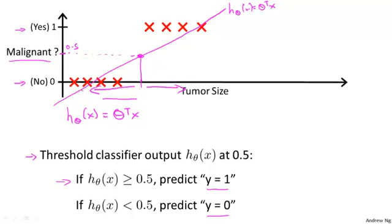But now let's try changing the problem a bit. Let me extend out the horizontal axis, and let's say we got one more training example way out there on the right. Notice that that additional training example doesn't actually change anything. Looking at the training set, it's pretty clear what a good hypothesis is: everything to the right of somewhere around here, we should predict as positive, and everything to the left, we should predict as negative because all the tumors larger than a certain value are malignant, and all the tumors smaller than that are not malignant.